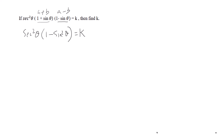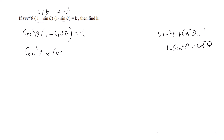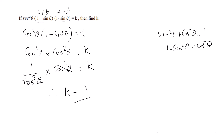So we have sec²θ · (1 - sin²θ) = k. We know that sin²θ + cos²θ = 1, so 1 - sin²θ = cos²θ. Therefore sec²θ · cos²θ = k. Since sec²θ = 1/cos²θ, the cos²θ terms cancel, and therefore k = 1.